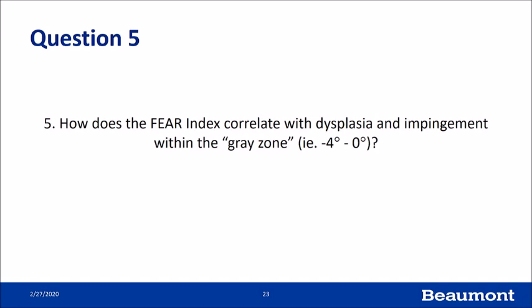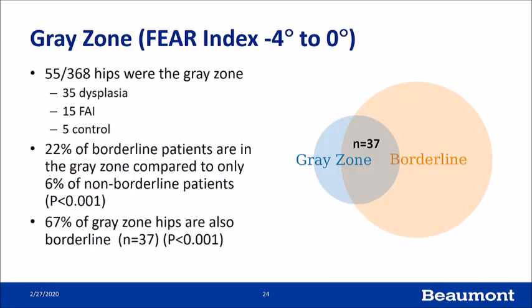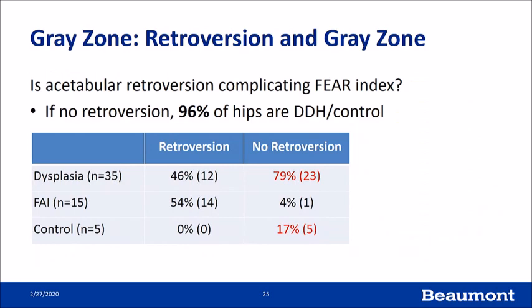Regarding the gray zone between minus four and zero degrees: 55 of 368 hips were in this zone. Twenty-two percent of borderline patients were in the gray zone compared to only 6% of non-borderline patients, which is statistically significant. Two-thirds of gray zone patients were also borderline. We examined whether acetabular retroversion identified by a positive crossover sign was complicating analysis. Without retroversion, 96% of borderline patients could be correctly identified as dysplasia or control; with retroversion, the FEAR index was not reliable.